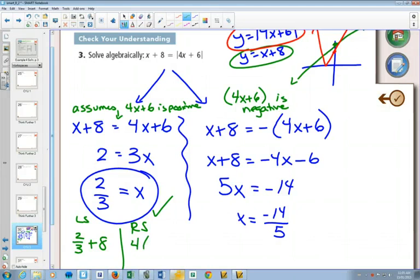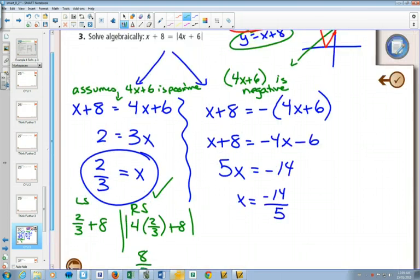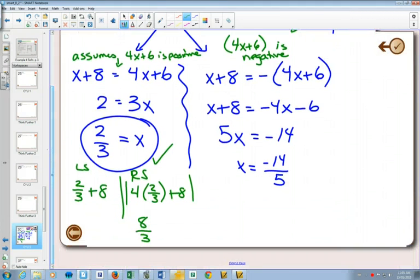On the other side, you would have 4 times 2 thirds plus 8 in absolute value bars. You would have to simplify that inside. You would get 8 over 3. Is that right? 8 over 3 plus 8? 8 over 3 plus 6. I knew I wrote something wrong.